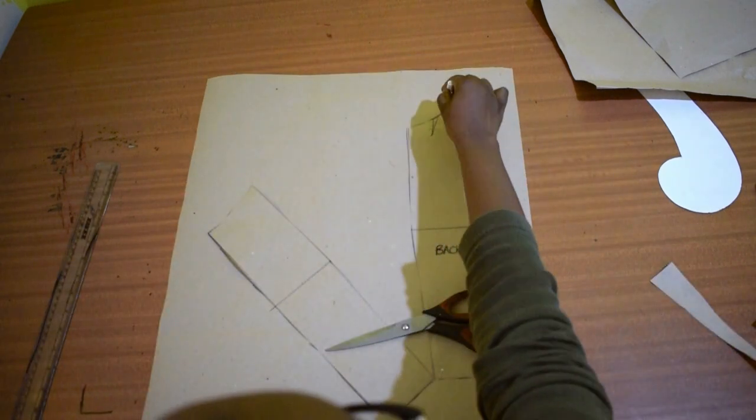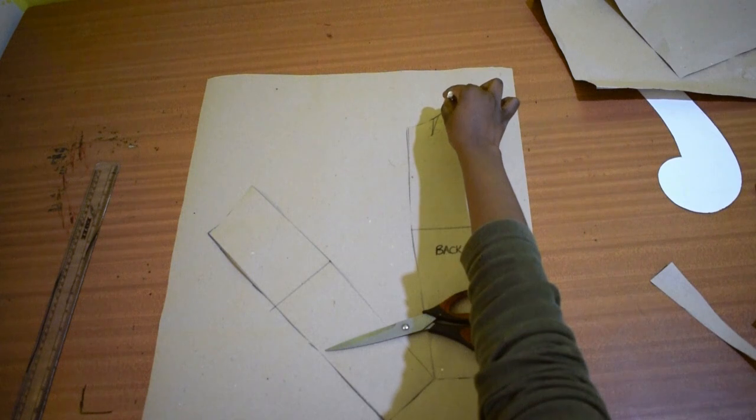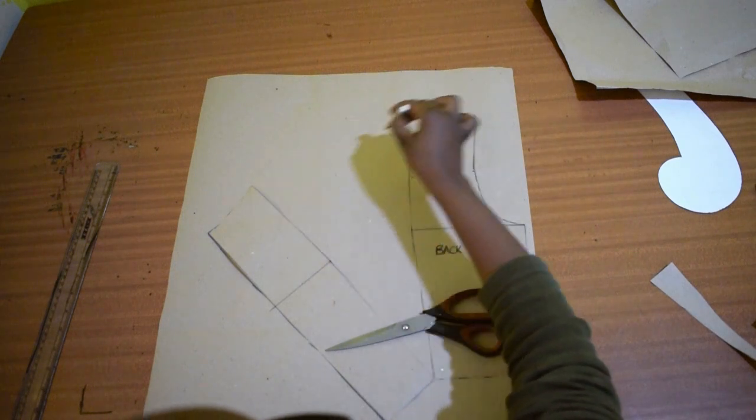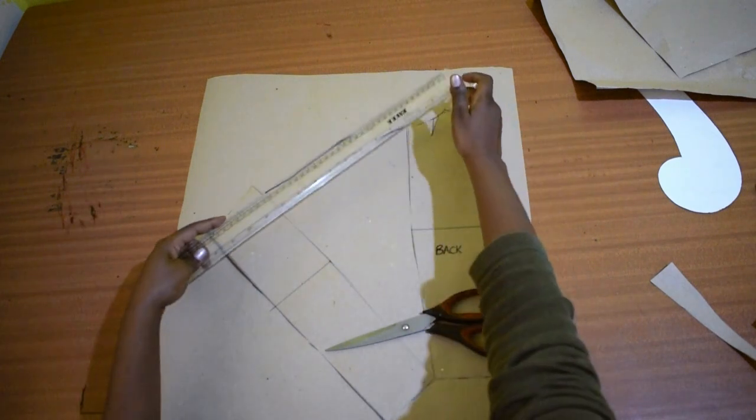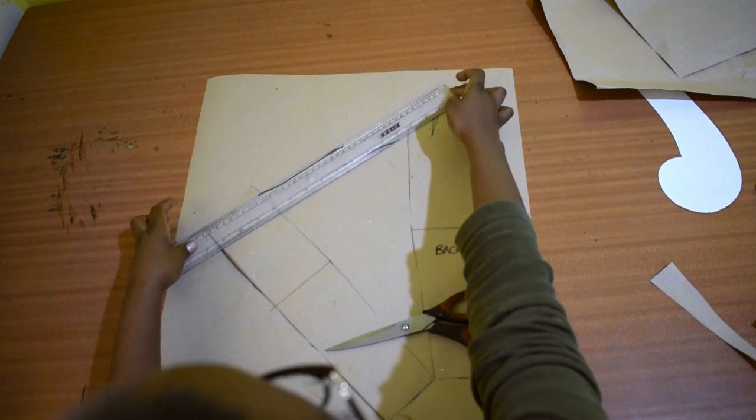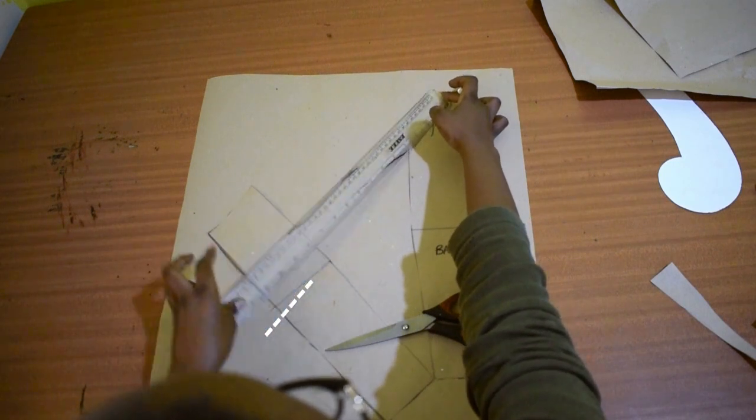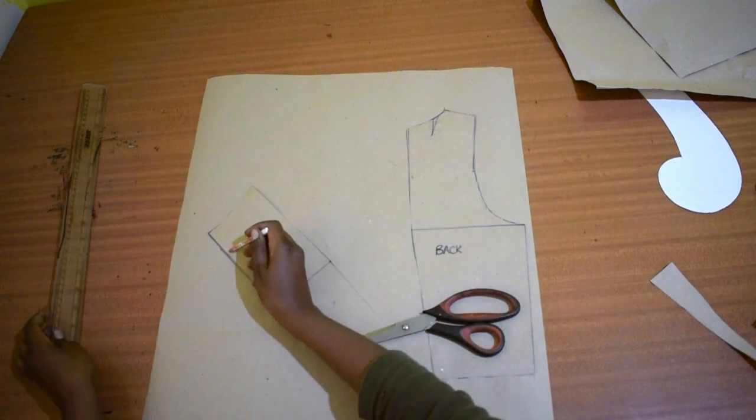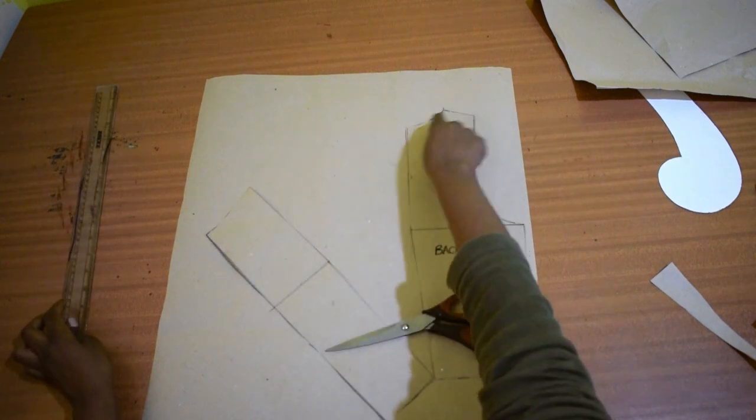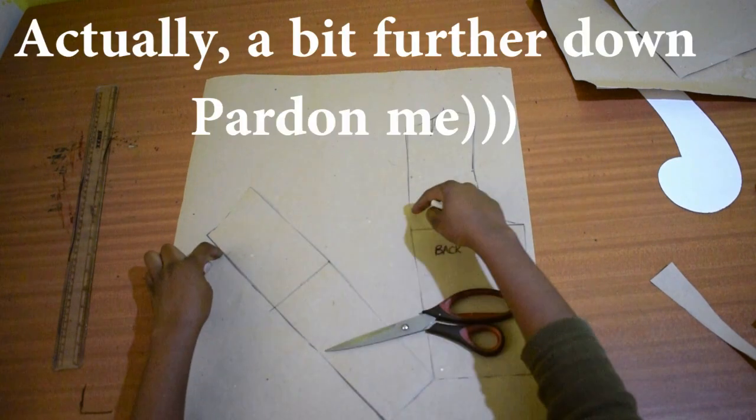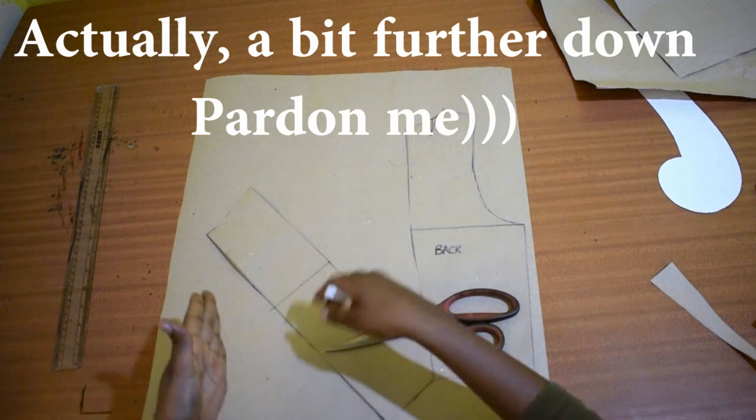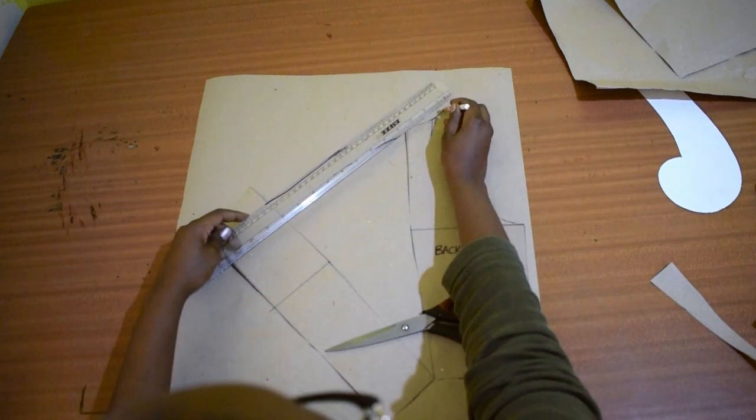This is the neck point. So you want to go down with a straight line. You can either go down to this point, this point, this point. But this point seems ideal. Because then when it falls, it will fall around this part. So that's what you do, let's draw that line.